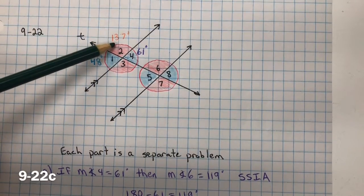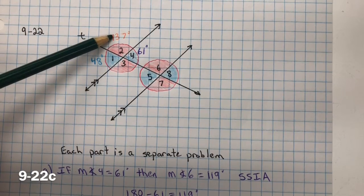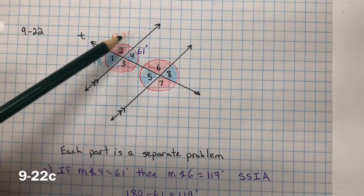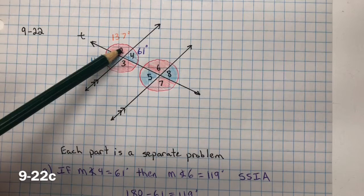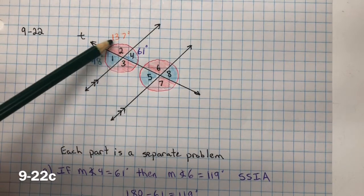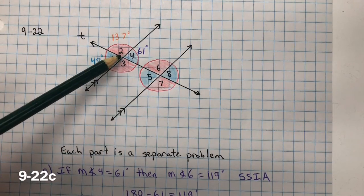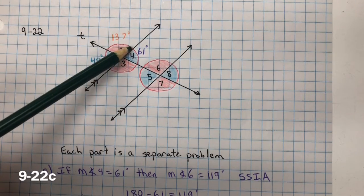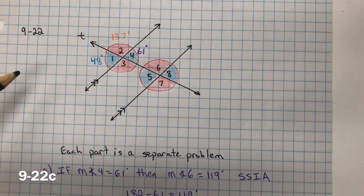For part C, the measure of angle 2 is 137, then the measure of angle 8. Now we see that these are opposite colors. We have a red and a blue. And earlier we talked about how opposite colors are supplementary angles, so they'll add up to 180 degrees. So 180 minus 137, this angle, will give us 43 degrees.